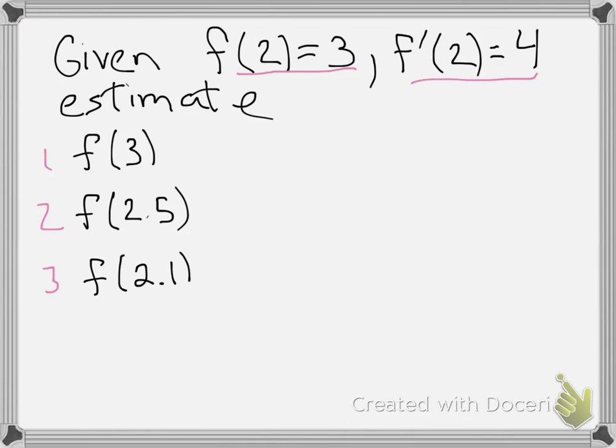Now remember what a derivative tells us. It gives us the instantaneous rate of change at that point. So we know at 2 our function is increasing by 4 units of output per 1 unit of input.